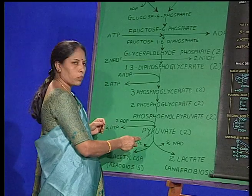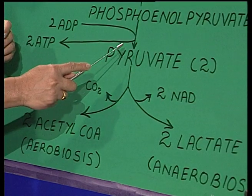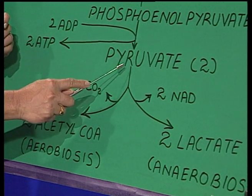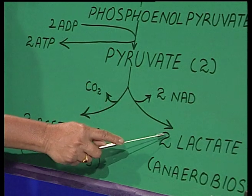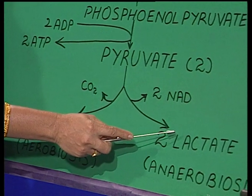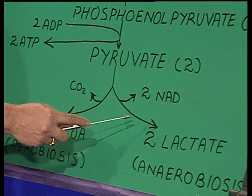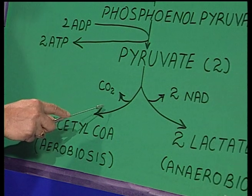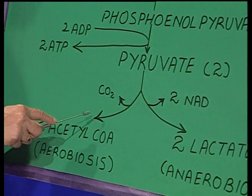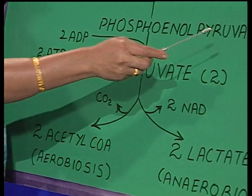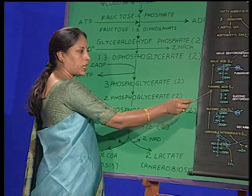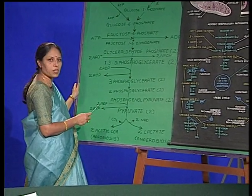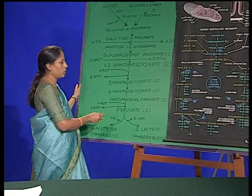The fate of the pyruvate molecule, which is the end product of glycolysis, depends upon the availability of oxygen. Under anaerobic conditions, pyruvate becomes lactate and enters into the muscle cell. Under aerobic conditions, it enters into the mitochondria and, using oxidative decarboxylation and oxidative phosphorylation involving the Krebs cycle and electron transport system, releases 34 molecules of ATP — almost 17 times more than that of glycolysis.